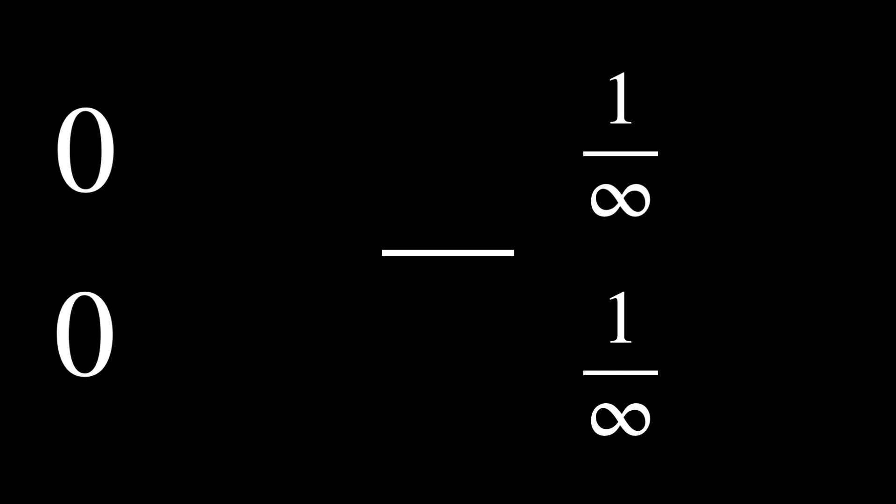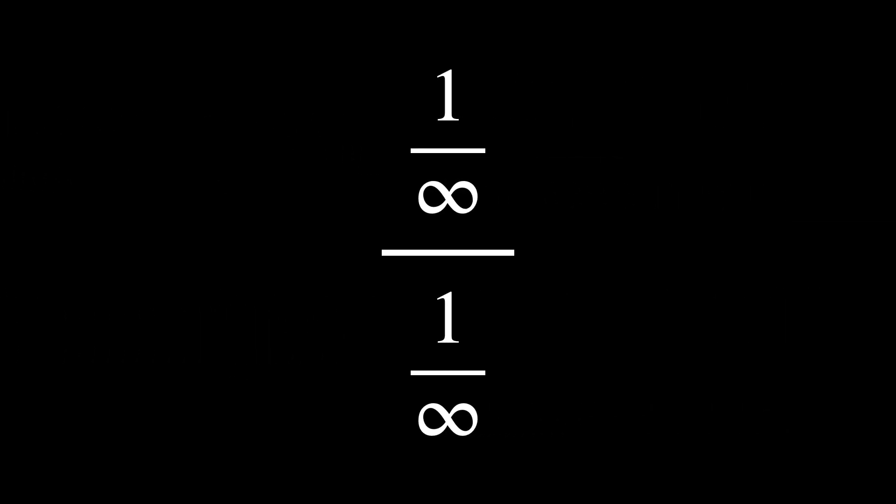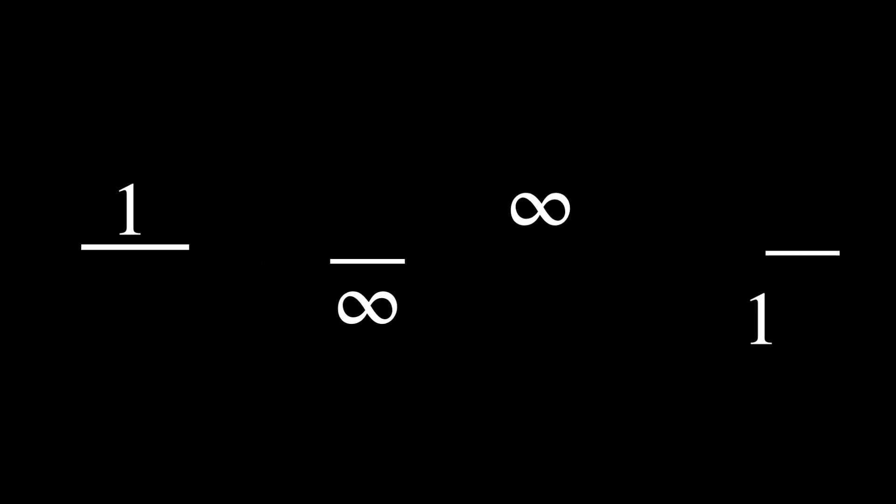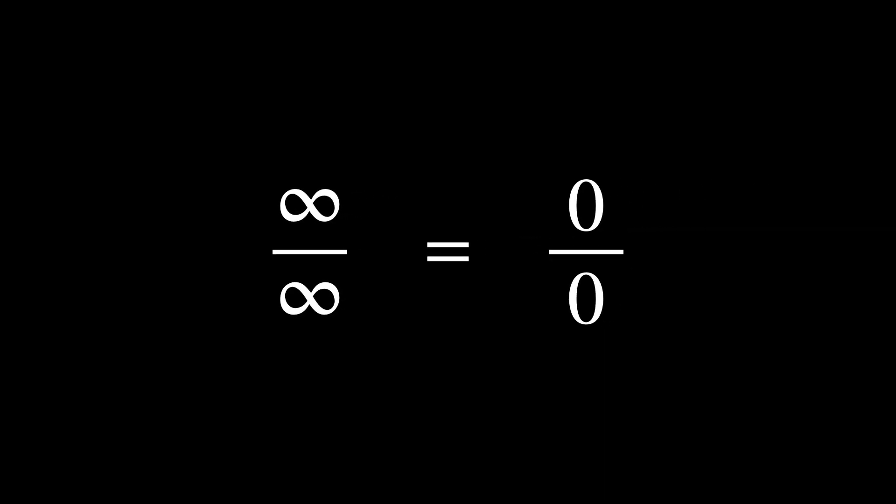Well, zero over zero is the same thing as saying one over infinity divided by one over infinity, which can be transformed into one over infinity times infinity over one, which simplifies to infinity over infinity. Thus, infinity over infinity is an equivalent of zero over zero and is an indeterminate form.